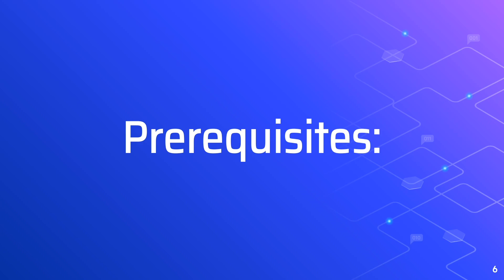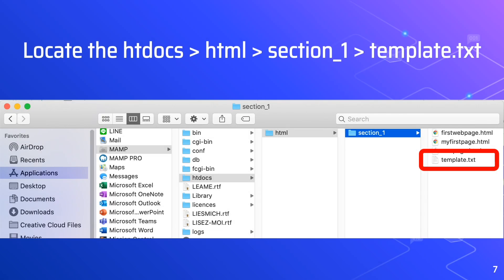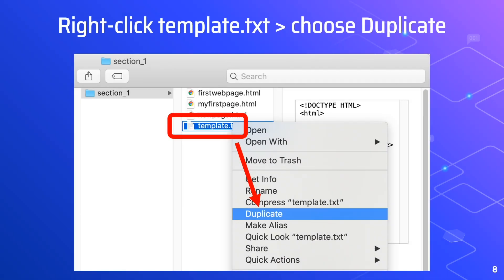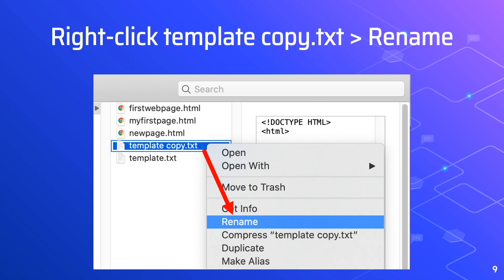Locate the htdocs folder, then the html in section 1 folder, then template.txt. Right-click the template file then choose duplicate. If you are using Windows, you can simply right-click the template file then paste it in the same folder. A duplicated file is created named template copy.txt.